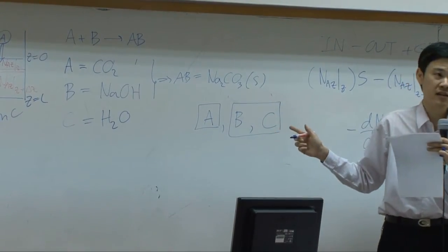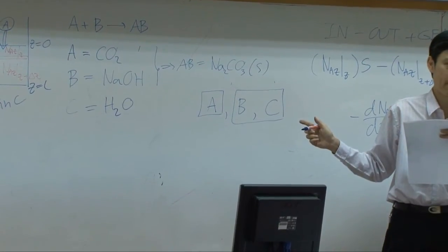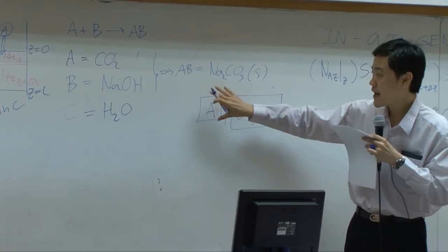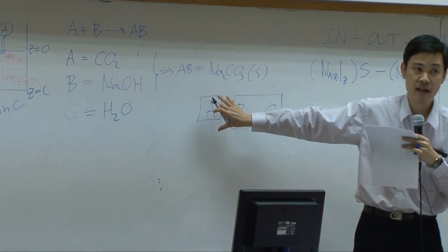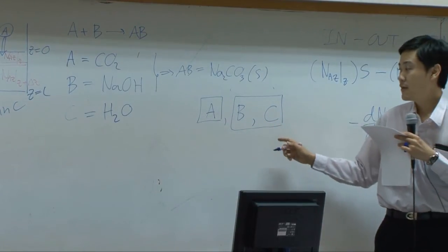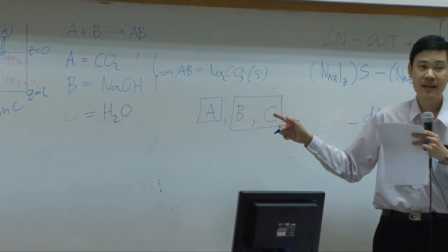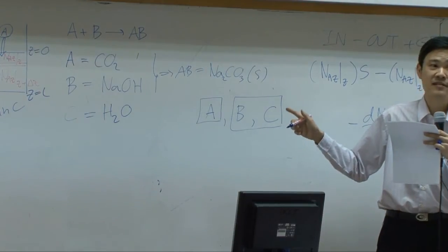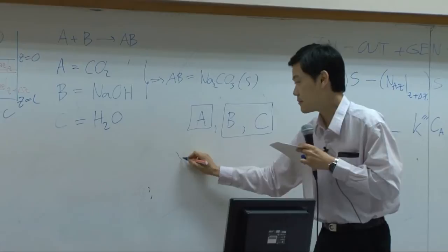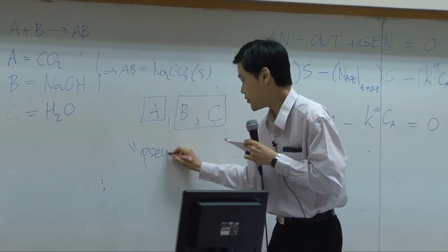If you can combine two species together and find the properties, physical properties of that combined species, you can take it as one single component. All right, so in here we will take A alone, and B—because we are interested in B—and C together. So now in our system it is considered as though we have only two species. This kind of system is called pseudo binary.